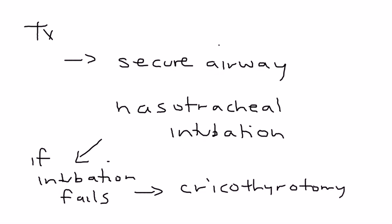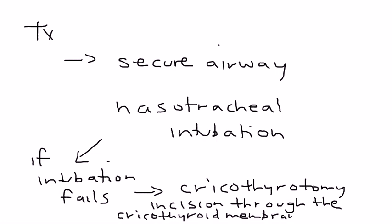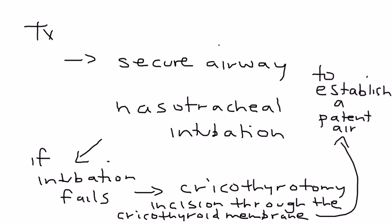And this is basically a procedure where you make an incision through the cricothyroid membrane right below the Adam's apple. And the procedure is done to establish a patent airway. So it's a very important procedure that's only done if intubation has failed.